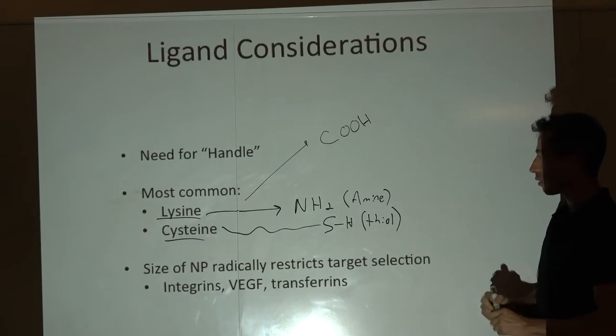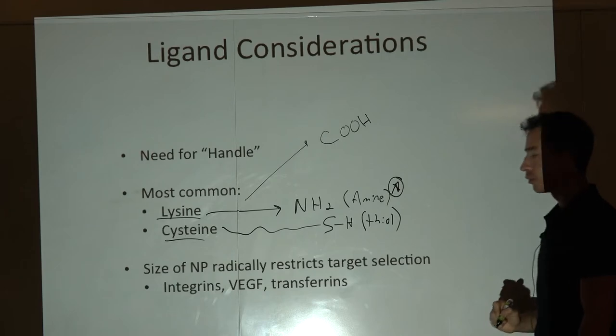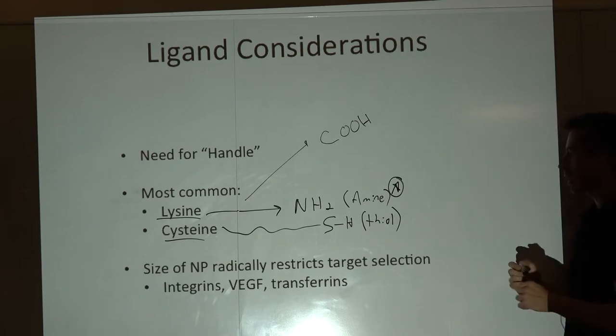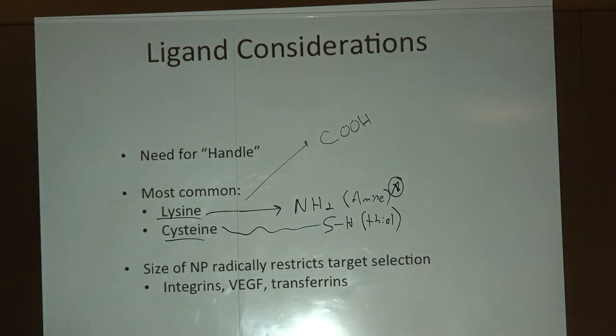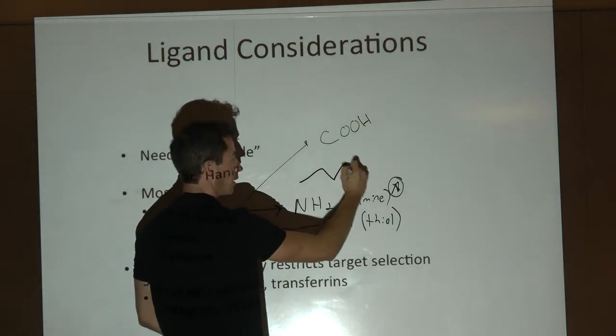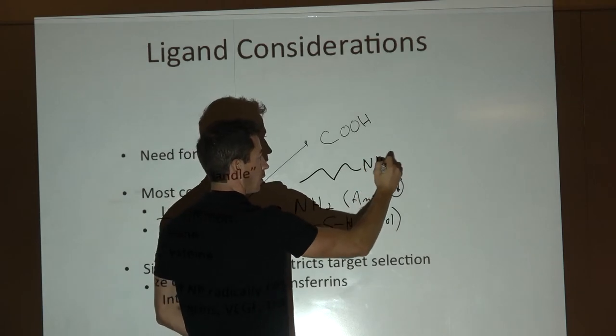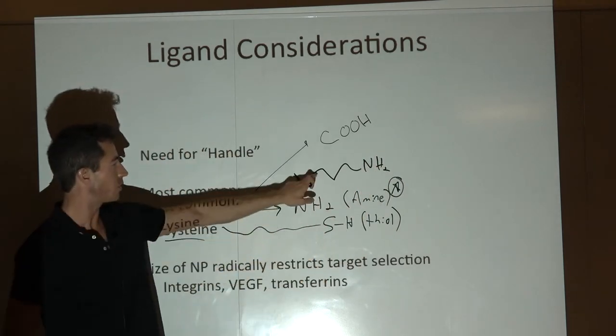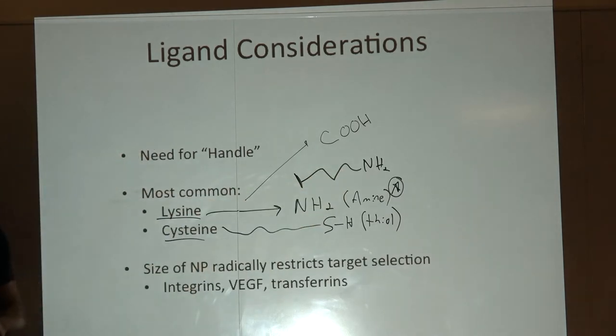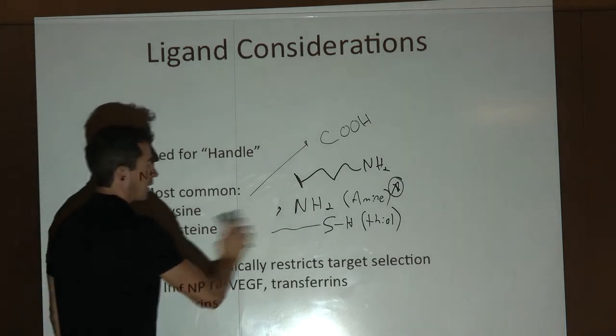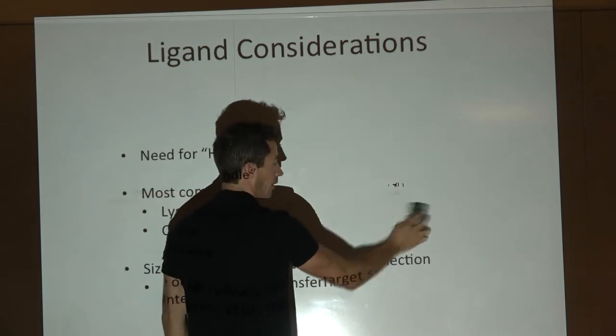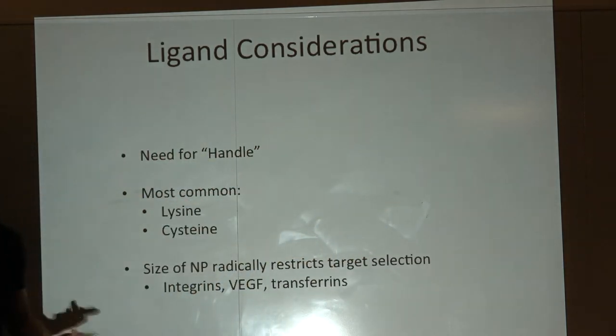Amines are generally what most people go with because proteins tend to have a lot of amines and they tend to be at the end. Lysine has a relatively long chain, so there's a fair amount of chain length between the peptide backbone and the primary amine. Primary amines are significantly more reactive.